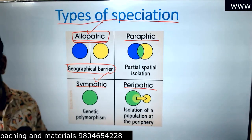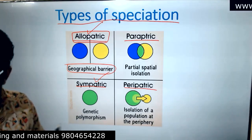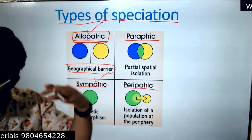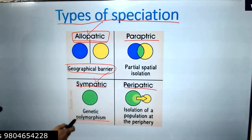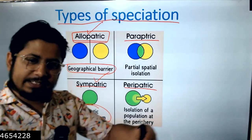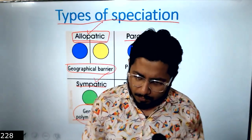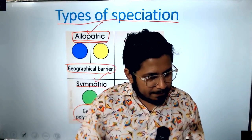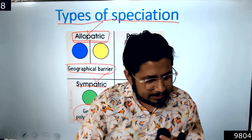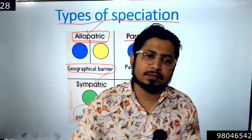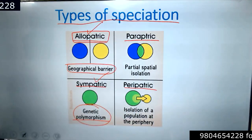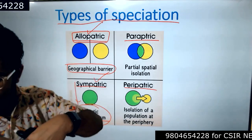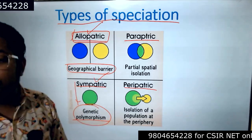In sympatric speciation, a change in allele frequency means modification of organisms while staying in the same environment — this is known as genetic polymorphism. Within the same population there are different genotypes, and a change in genotype leads to differences in function, morphology, and reproductive behavior, creating new species while remaining in the same habitat. Allopatric speciation, by contrast, requires mandatory geographical isolation separating the organisms.